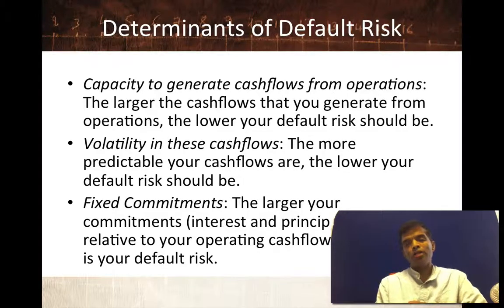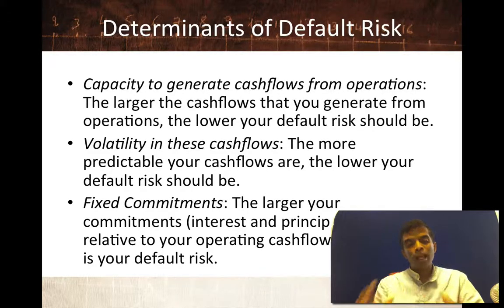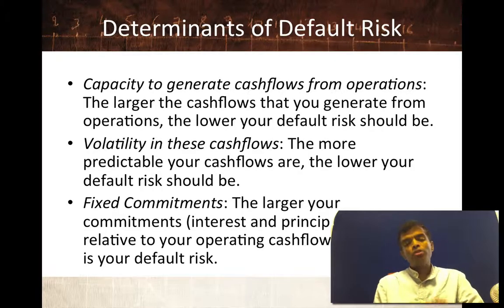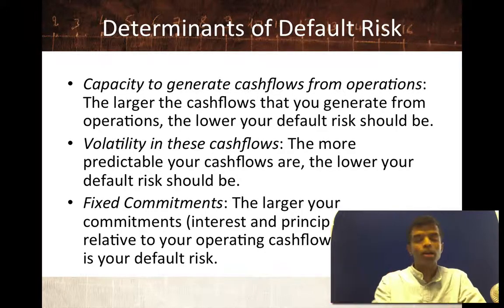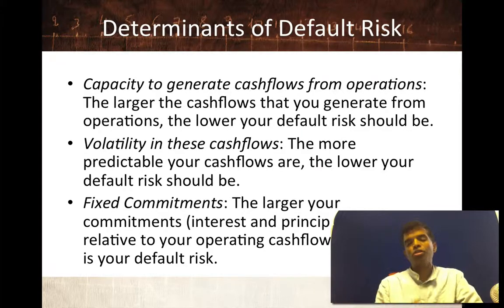Let's think about the variables in an entity that will determine how much default risk you're exposed to. When you buy a corporate bond, you'll look at that company's capacity to generate cash flows. The more cash flows a company can generate, and the more stable those cash flows are, the less the default risk. So if you buy Coca-Cola bonds, those cash flows are huge and very stable — there's not that much default risk. It also depends on what other commitments that company has made. If a company has borrowed money from others or has contractual commitments to suppliers and employees, those fixed commitments represent a competing claim on cash flow, and the more of them there are, the greater the default risk.